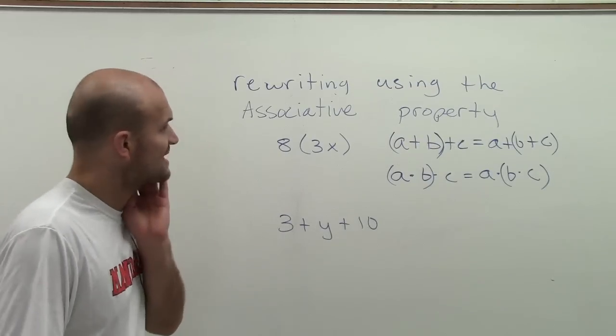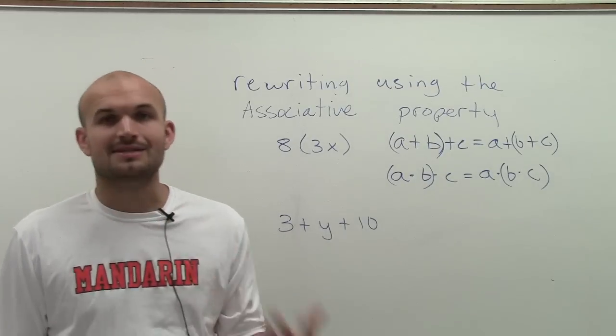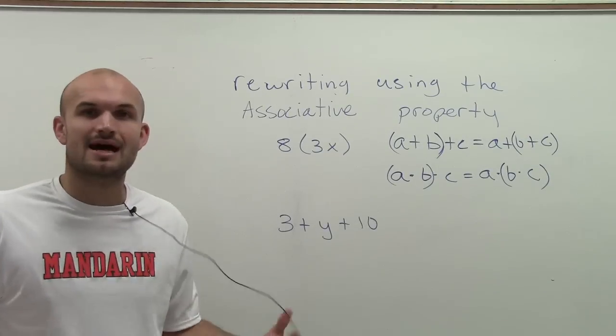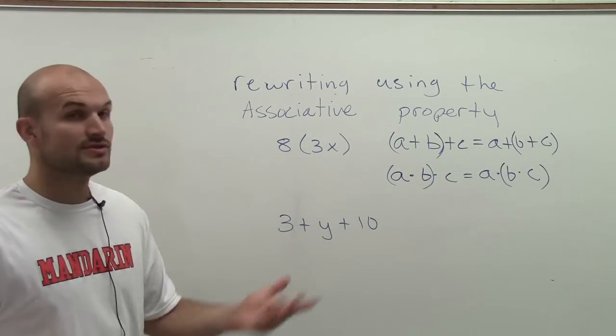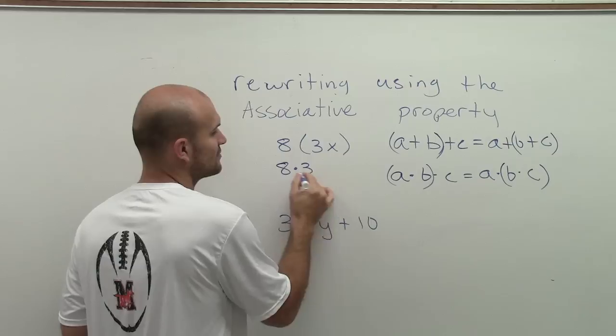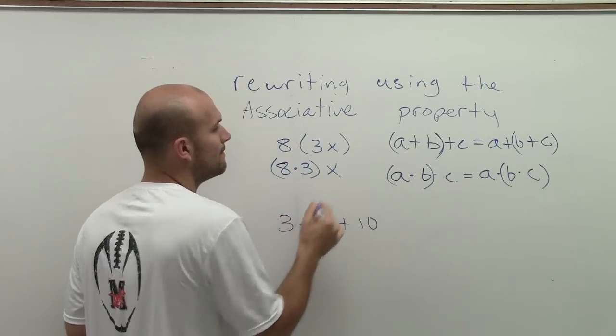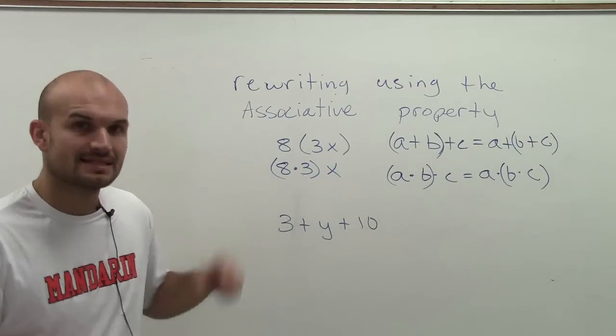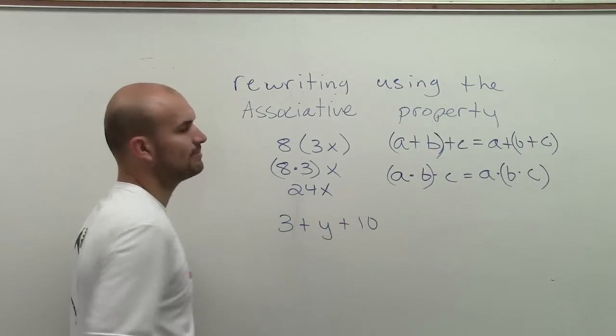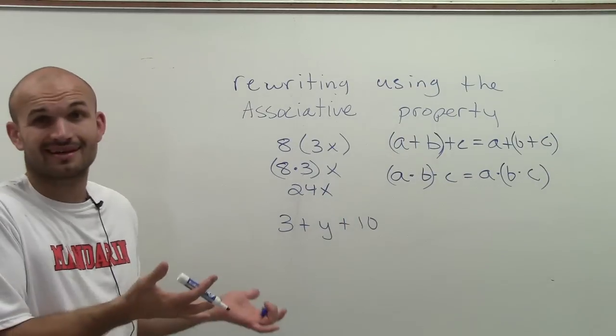Here I have 8 times 3x. A lot of students will get mixed up. How can I rearrange this? We can use the associative property to allow us to say 8 times 3, then multiply that by x. Well, 8 times 3 we know is 24, then multiply by x. And there we go.